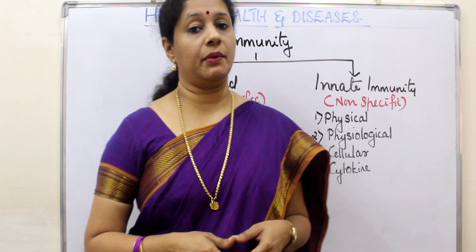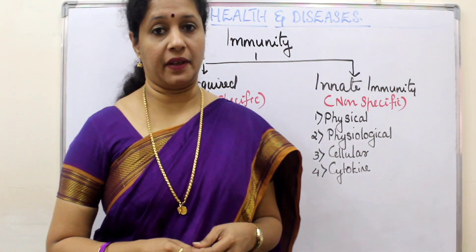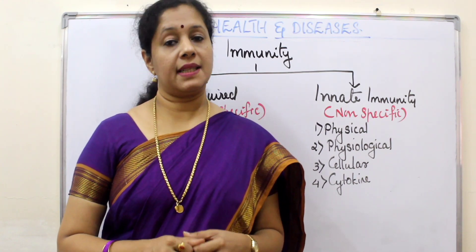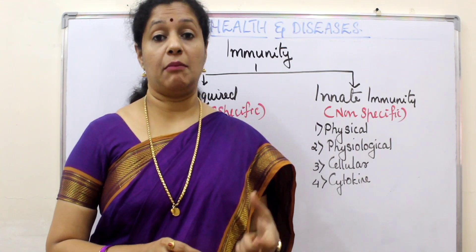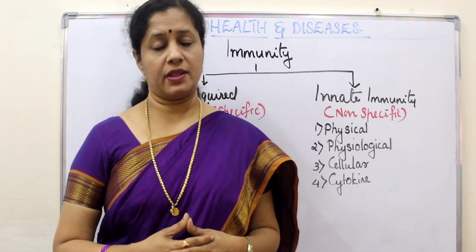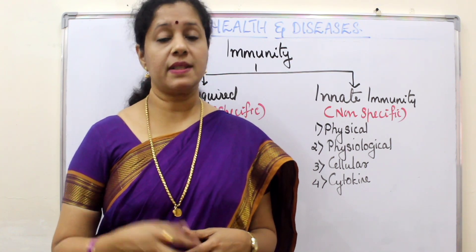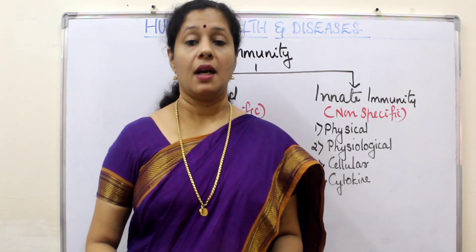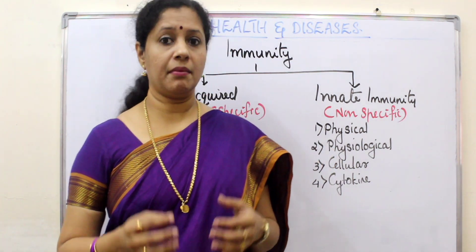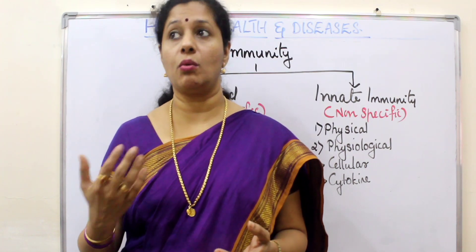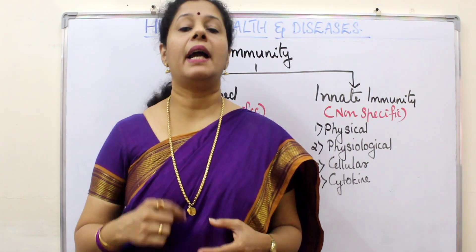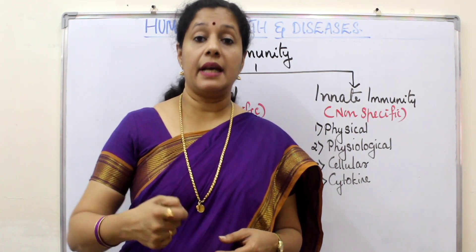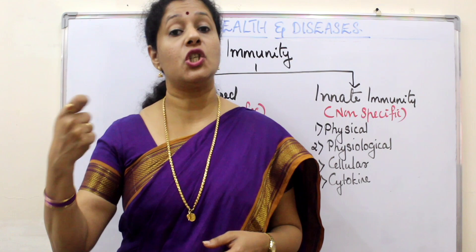Now, coming to acquired immunity. Acquired immunity is actually pathogen-specific — it is the memory of our immune system. For example, it is well explained with chickenpox. First time when we get chickenpox, the virus comes to our body as a new intruder. Our immune system finds out that chickenpox virus has come and produces antibodies against it. These antibodies are very specific in nature — produced by B lymphocytes with the help of T lymphocytes.